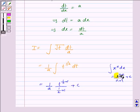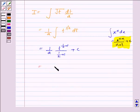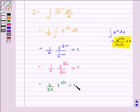So here n is 1 by 2. So this is equal to 1 upon a into t to the power 3 by 2 upon 3 by 2 plus c, which is again equal to 2 by 3a into t to the power 3 by 2 plus c.